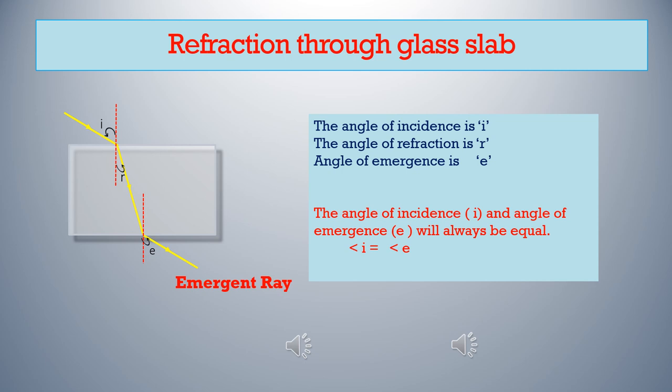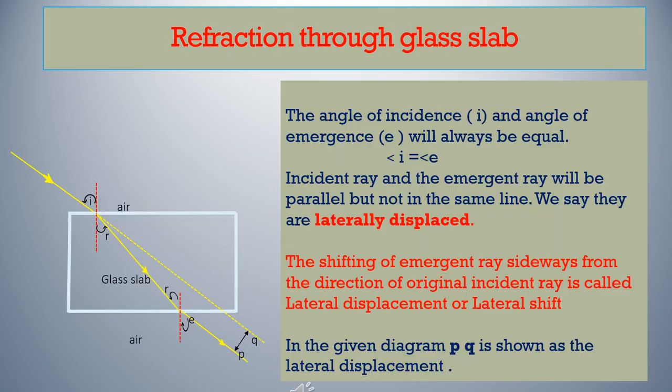Here, angle of incidence is represented by small letter i, angle of refraction by small letter r, and angle of emergence by small letter e. The angle of incidence and angle of emergence will always be equal — that is, angle i is equal to angle e.